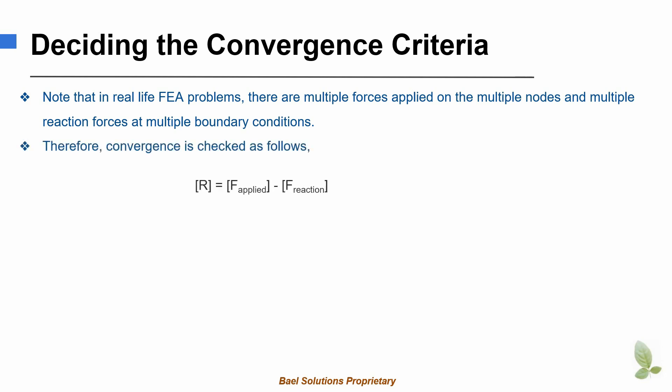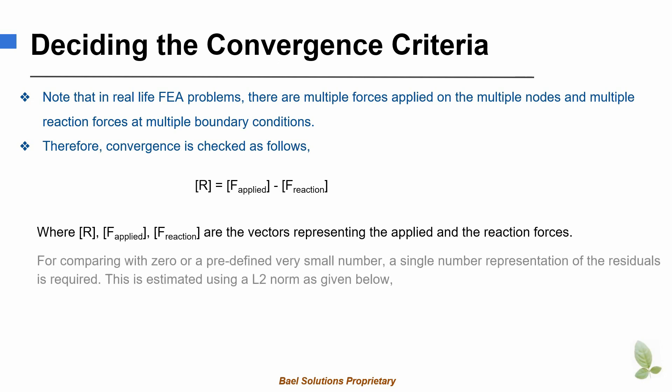Therefore, the residual vector is calculated by subtracting the nodal reaction force vector from the nodal load vector. For the purpose of comparison, a norm or magnitude of the residual vector is required. The norm is calculated using the relation shown in the slide. The norm of the residual vector R2 is equal to the square root of the sum of the square of the nodal residuals.